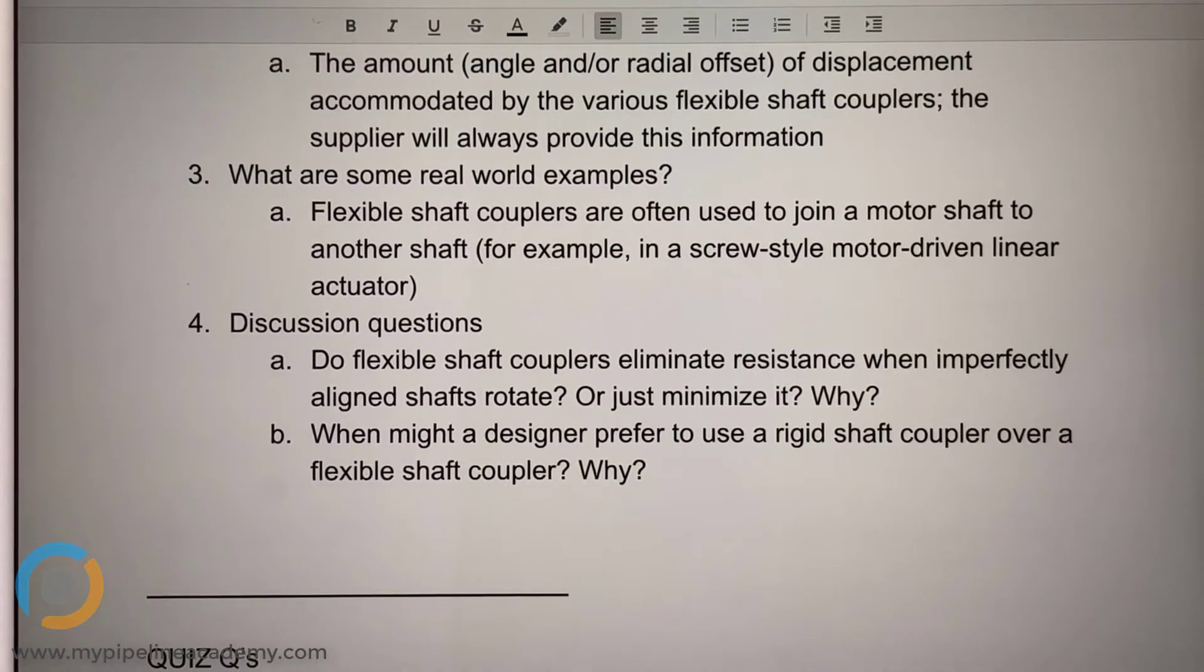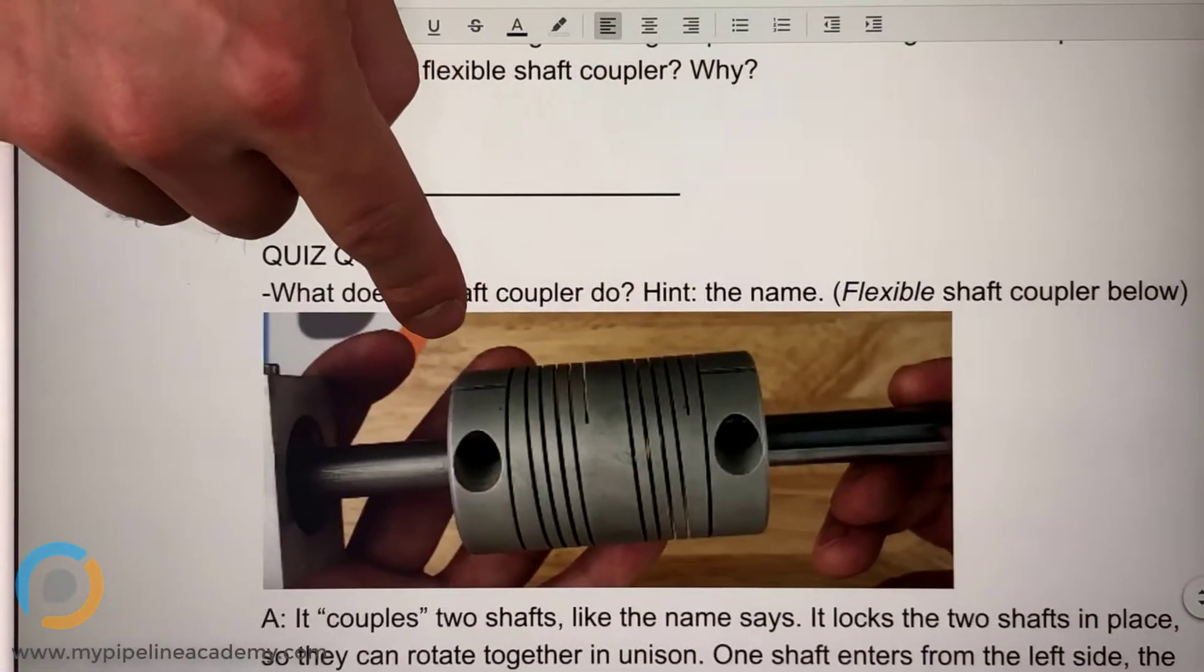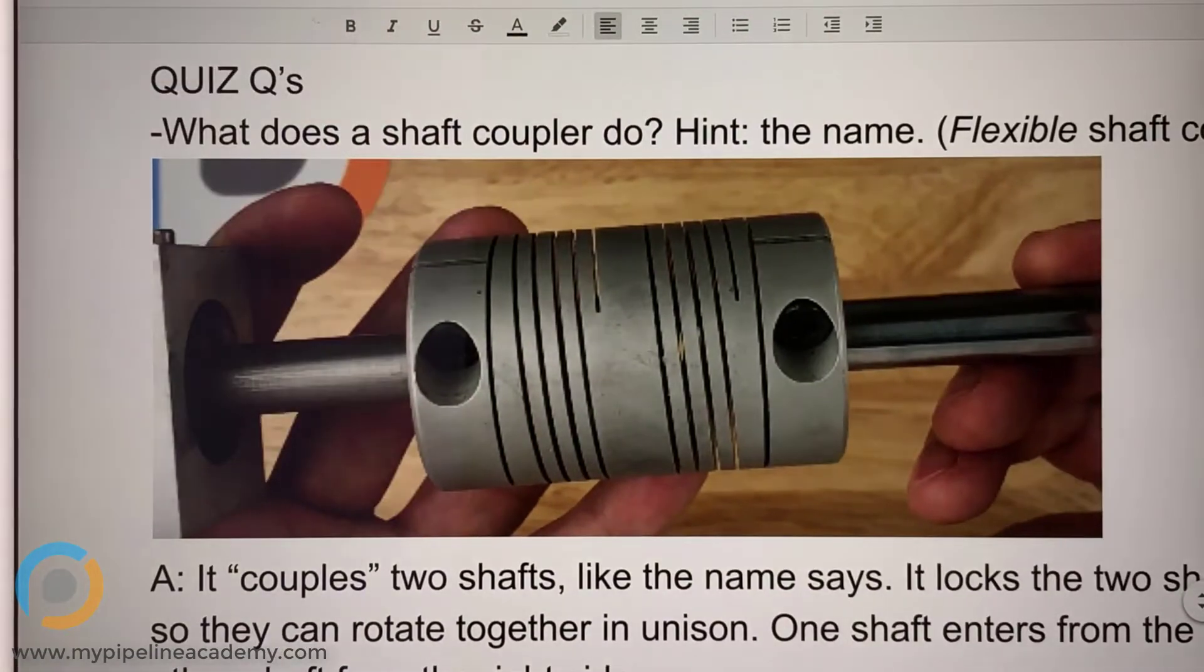Okay, so let's go to a picture of a flexible shaft coupler. This one, correct? And does it eliminate resistance, or does it minimize it, and why?